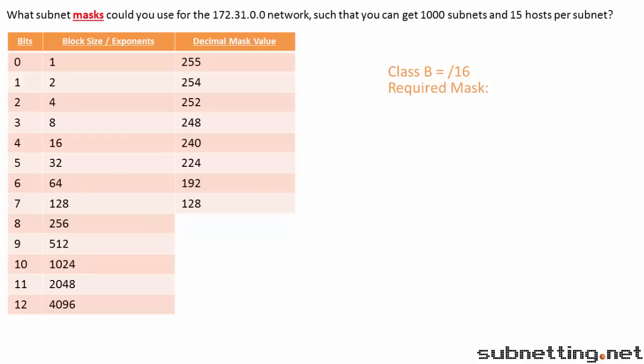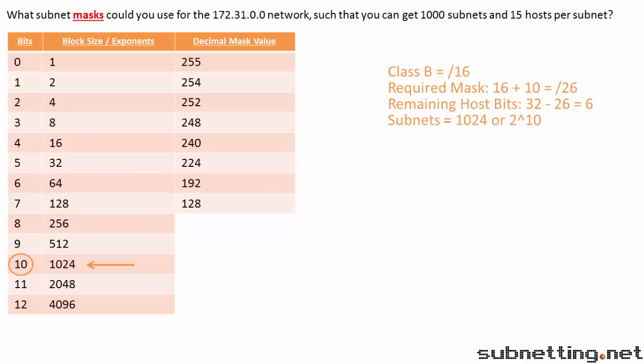The first power of 2 which is greater than 1,000 is 1,024, which corresponds to 10 bits. Our default mask has 16 bits plus 10 more bits equals slash 26. This should be one of our answers, but let's confirm. 32 total bits minus 26 bits equals 6 host bits. With 10 subnet bits, we can have 1,024 subnets — and that's enough. With 6 host bits, we can have 2 to the 6th minus 2, or 62 hosts, and that is enough.